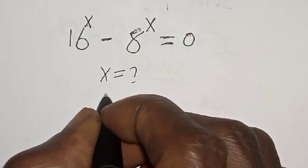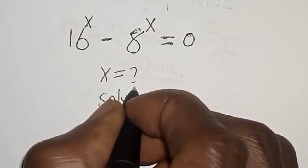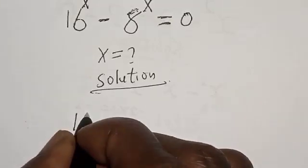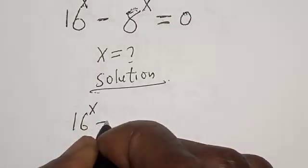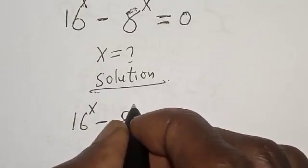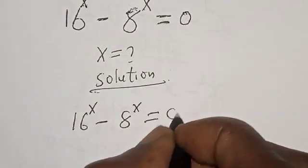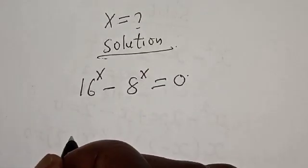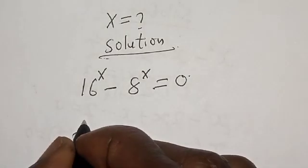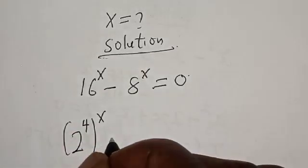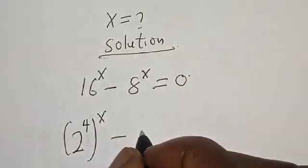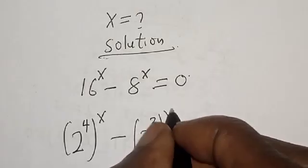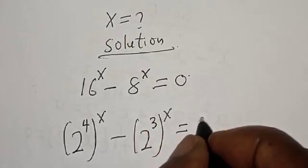Solution. We have the given equation: 16 raised to power x minus 8 raised to power x is equal to 0. Then 16 raised to power x is the same thing as 2 raised to power 4, raised to power x. And 8 raised to power x is 2 raised to power 3, raised to power x, which equals 0.